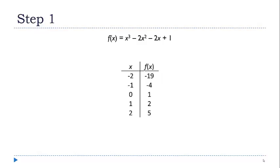The first step in using this method is to come up with two numbers where the function is positive for one of them and negative for the other. And you can see that here with zero and negative one.